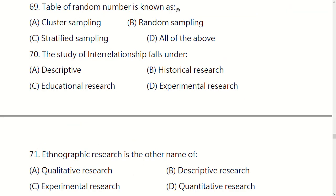A table of random numbers is known as: cluster sampling, random sampling, stratified sampling, or all of the above. The right option is C.